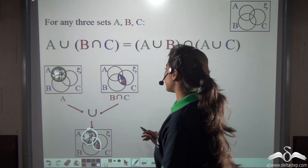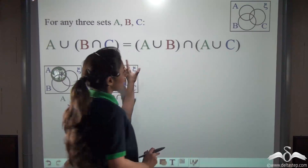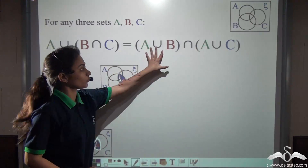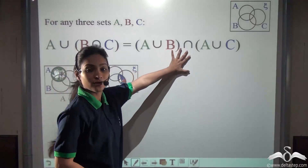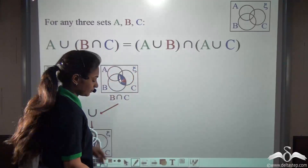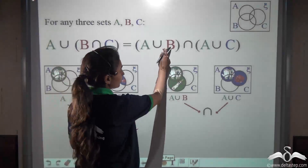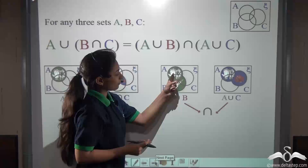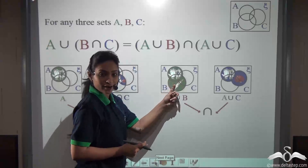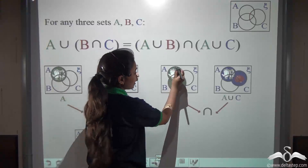Now let's see. Can we derive this from what we have already — that is, from the right hand side? A union B can be represented in a Venn diagram like this.